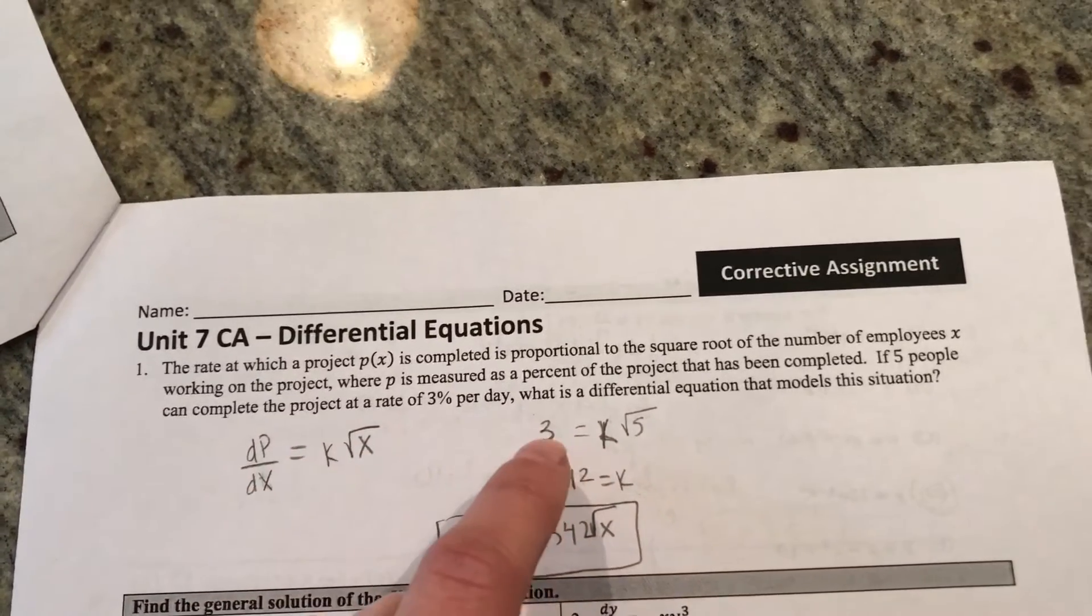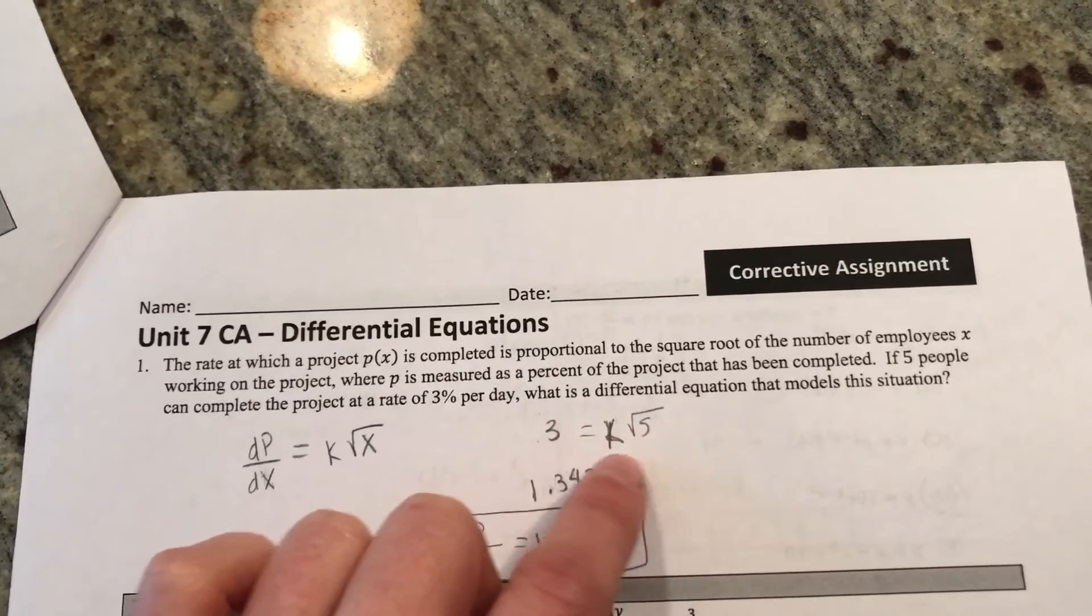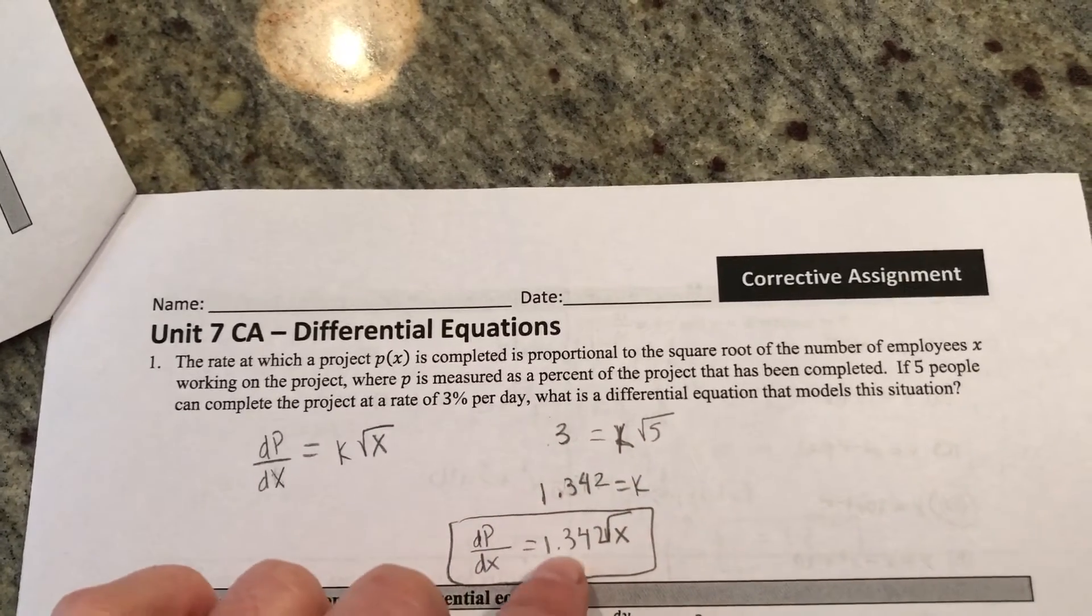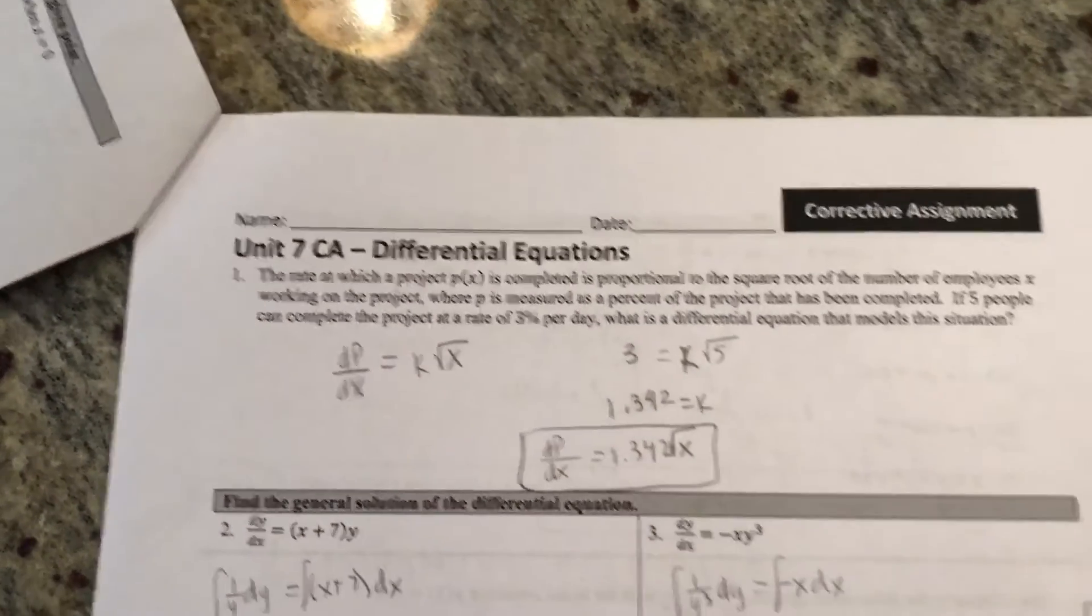Here they're just trying to get you to find the value of k. They tell you that dp/dx is 3 and x is 5, so they're trying to get you to find k. But be more focused on being able to get that equation.